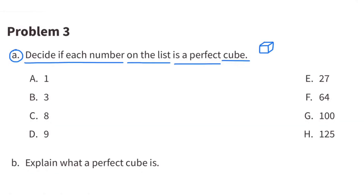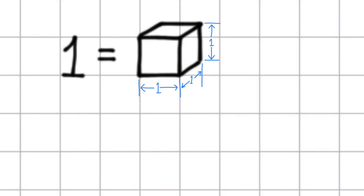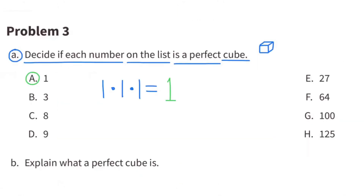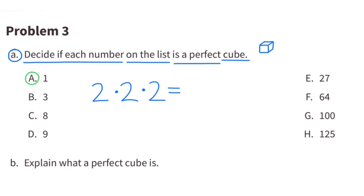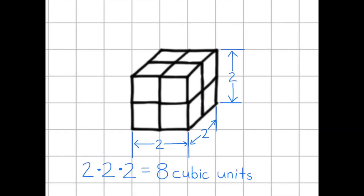Number 3A. Decide if each number on the list is a perfect cube. Cubes are three-dimensional — they have a height, a width, and a length. A height of 1, a length of 1, and a width of 1 gives 1 times 1 times 1, which equals 1 — one perfect cube, or 1 unit to the third power. 2 times 2 times 2 equals 8, so C: 8 would be a perfect cube. This cube is 2 units wide, 2 units long, and 2 units tall — 2 times 2 times 2 equals 8 cubic units.